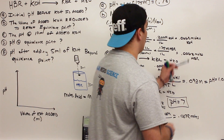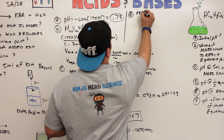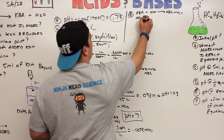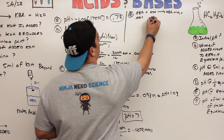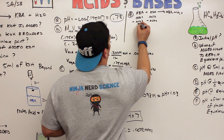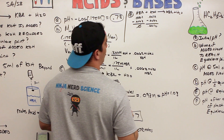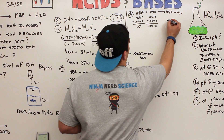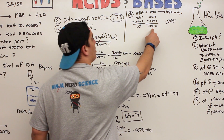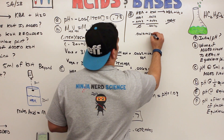Writing out the reaction: HBr + KOH → KBr + H₂O. We have 0.0062 moles of HBr and 0.0072 moles of KOH. HBr is now the limiting reagent, so all of it gets used up. We're left with 0.0072 − 0.0062 = 0.0010 moles of KOH excess. The KBr formed is a neutral salt and doesn't affect pH. So we have 0.0010 moles of KOH remaining in solution.